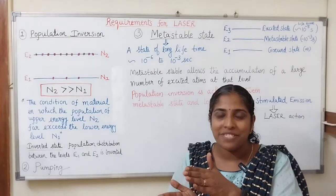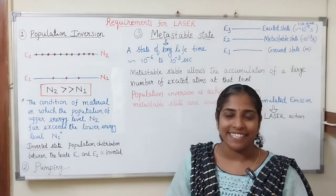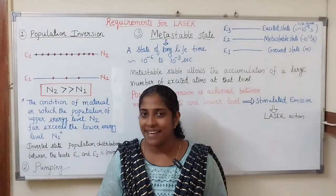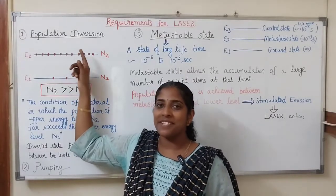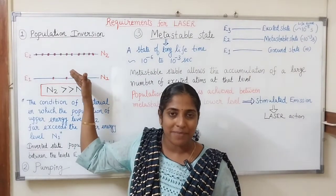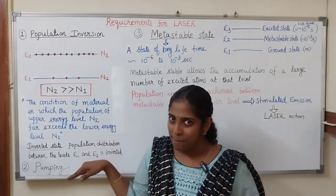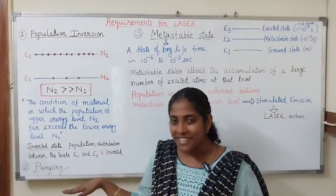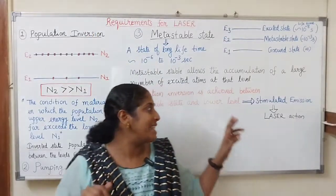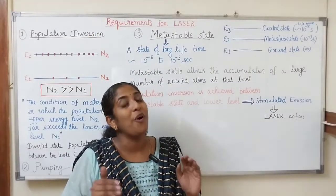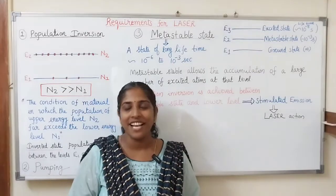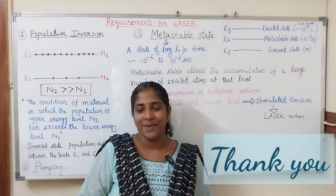So, the three main requirements for laser are: first, population inversion — the number of atoms in the higher energy level is much greater than the number of atoms in the lower energy level; second, pumping — the method of raising atoms from the lower energy level to the higher energy level; and third, a metastable state of long lifetime to achieve stimulated emission between the higher energy level and lower energy level.